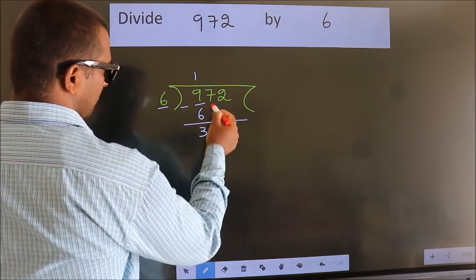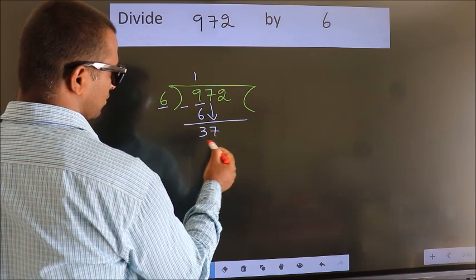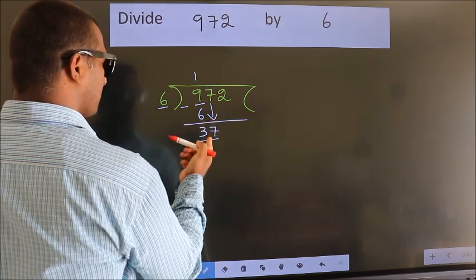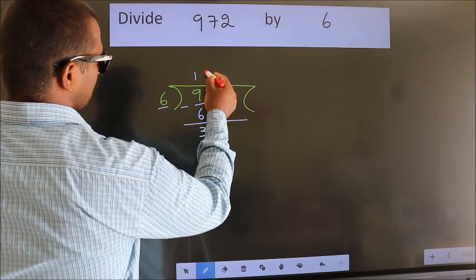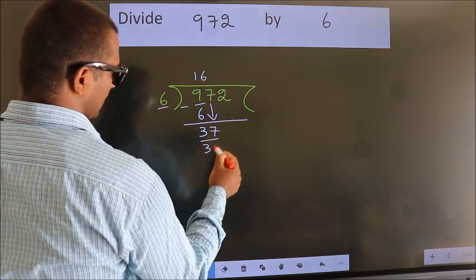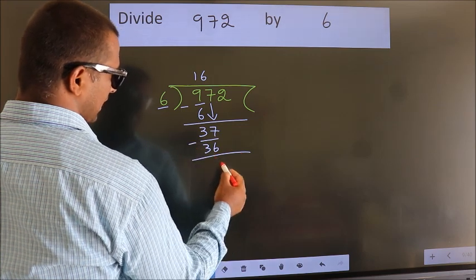After this, bring down the beside number. So, 7 down. So, 37. A number close to 37 in the 6 table is 6 times 6, 36. Now we subtract. We get 1.